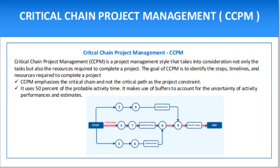CCPM looks at the schedule and determines which set of activities, if delayed, will extend the end date of the project. In this way, the critical chain is identified and you can pinpoint the steps and resources needed to complete a project in the fastest and most efficient manner. CCPM emphasizes the critical chain — not the critical path — as the project constraint. It uses 50% of the probable activity time and makes use of buffers to account for uncertainty in activity performance estimates. These buffers serve as a highly effective measurement tool for controlling the project schedule and are linked to the constraining company resource. CCPM also aims to improve the behavior of the project team, enforce early reporting of activities, and eliminate multitasking.